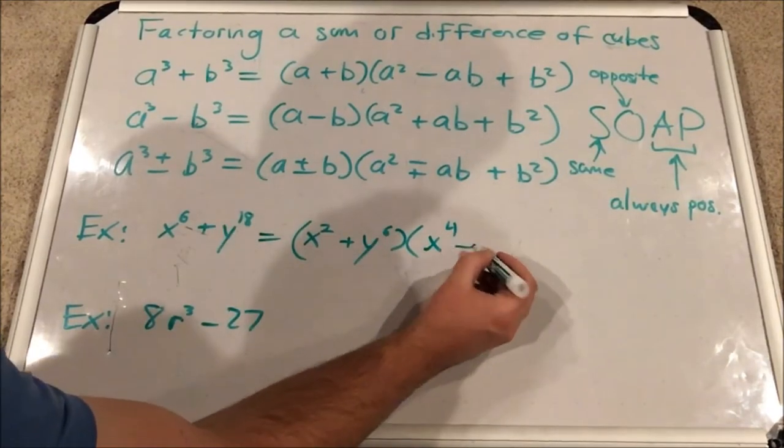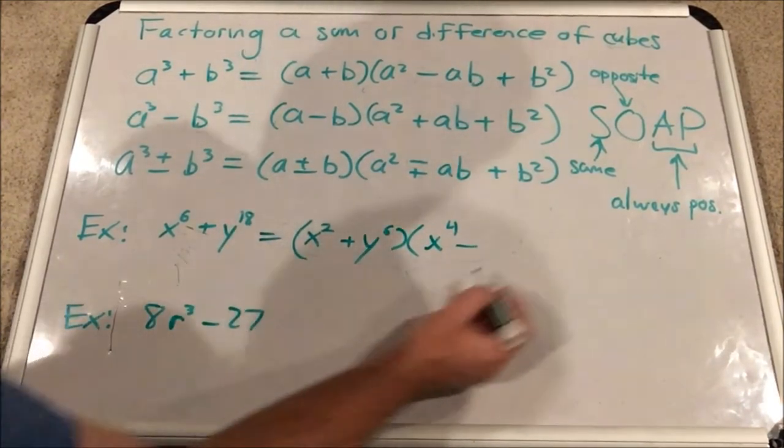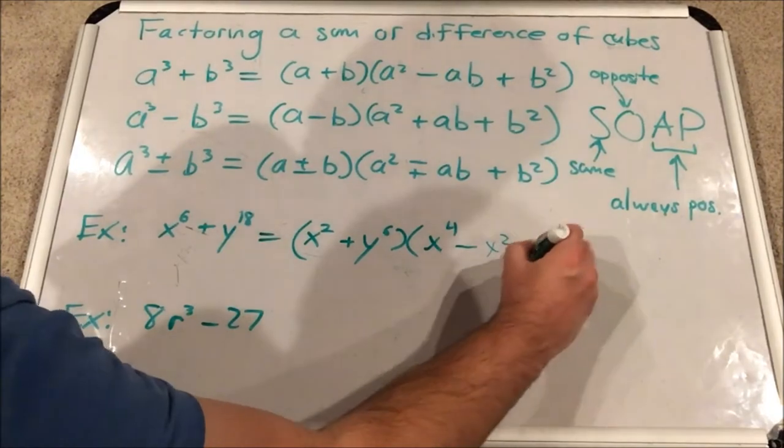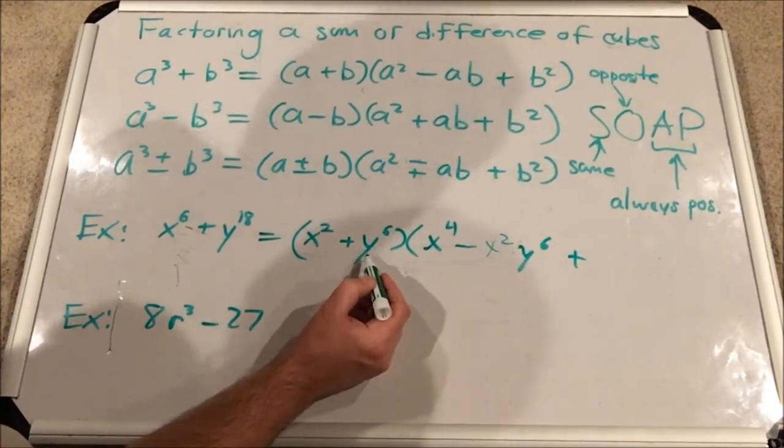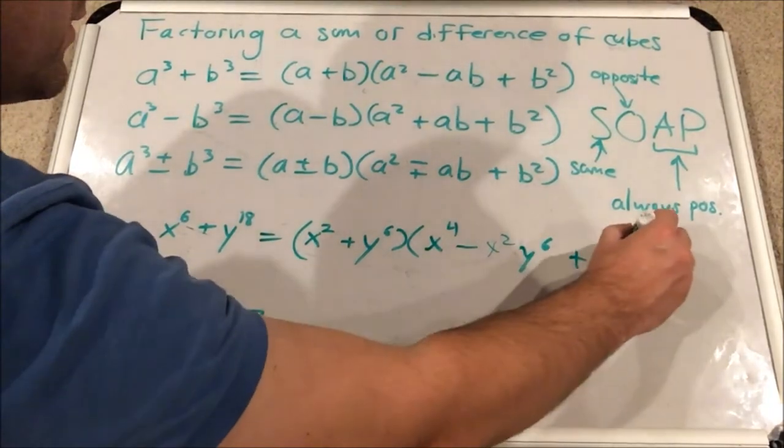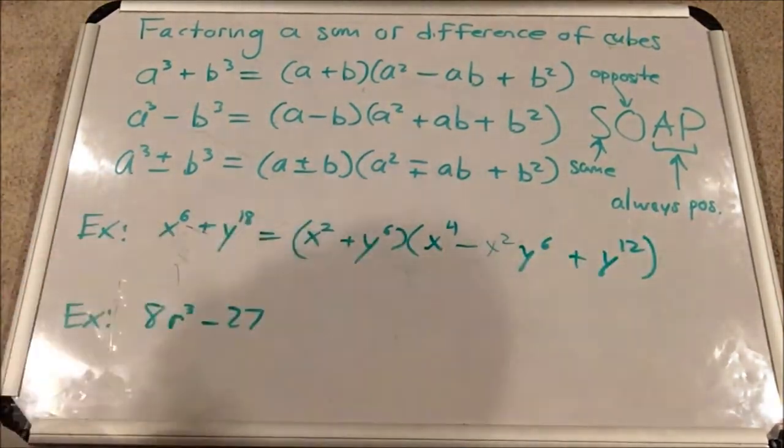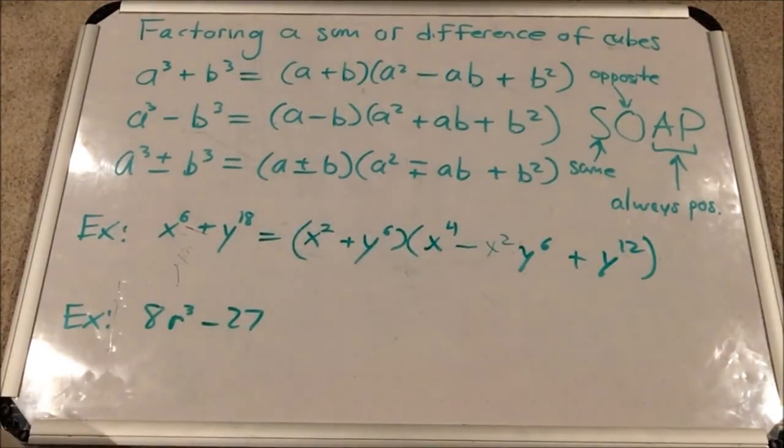Then opposite sign, minus the product of these two terms, x squared, y to the 6, plus the second term squared. That would be y to the 12th. 6 times 2 is 12. So that's how that factors. Let's check out this next one.